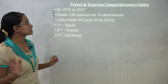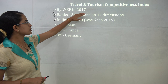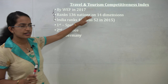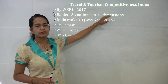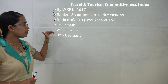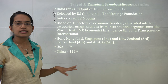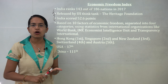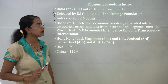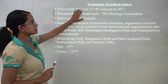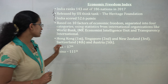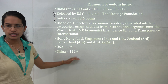Some major indices: the Travel and Tourism Competitiveness Index released by WEF in 2017 ranks 136 nations on 14 dimensions. India ranked 40, improved from 52 in 2015. The top country is Spain, followed by France and Germany. The Economic Freedom Index: India ranks 143 out of 186 nations, released by the US Heritage Foundation with a score of 52.6 points based on 10 factors. Top countries are Hong Kong, Singapore, and New Zealand; the US ranks 17 and China at 111.